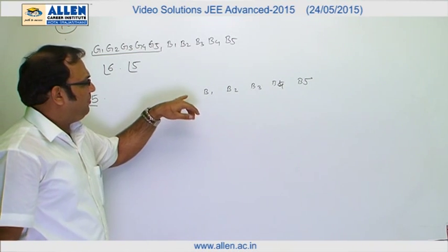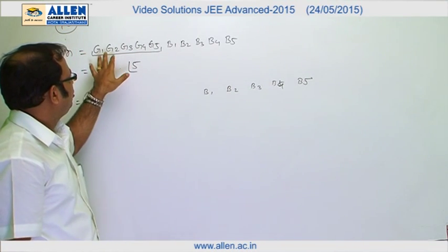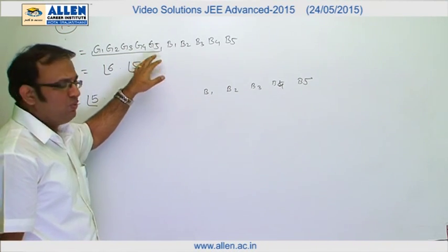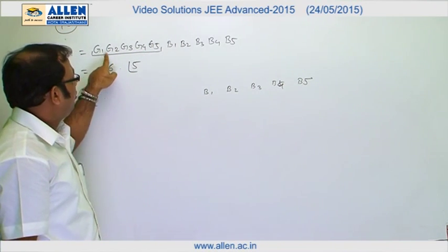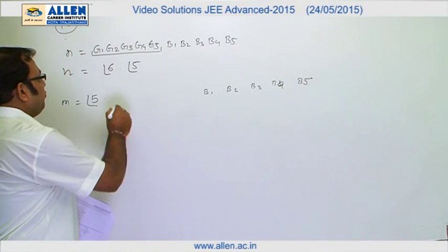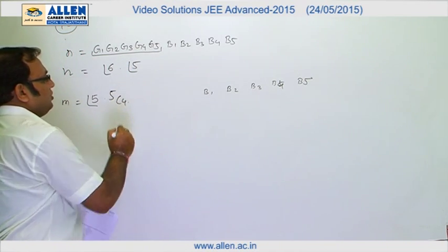Now we will basically form 2 bunches of the girls. One bunch will contain 4 girls and the other bunch will contain 1 girl. So out of these 5 girls, first I will select 4 girls, 5C4.